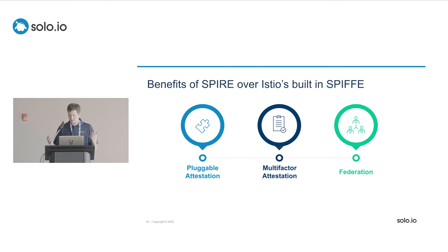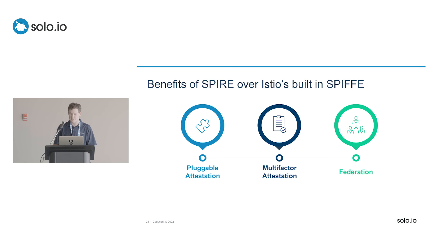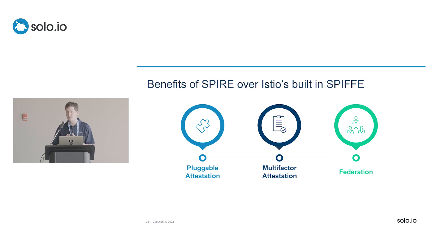There are several benefits. First, pluggable attestation: the attesters in SPIRE follow a plugin pattern so you can write your own, and various vendors publish them. You can specify all the different things you want to base identity on — in AWS it might be instance ID, region, or a specific account — at any level of detail. Second, multi-factor attestation: there's no limit to the number of attesters for a specific identity, and the more you have — assuming they're securely verifiable — the more secure your identity becomes. Third, federation: you can do multiple servers, multiple trust domains, and tiered identity servers, which is much more flexible than Istio's out-of-the-box offering for advanced use cases.